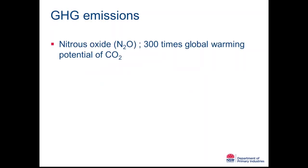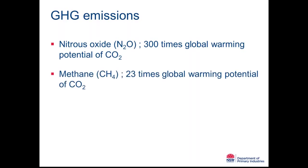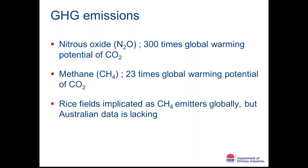The greenhouse gases we are interested in are nitrous oxide, which has 300 times the global warming potential of carbon dioxide — so very small quantities of nitrous oxide can have a profound impact on the overall greenhouse gas balance of a crop. And methane, which has 23 times the radiative forcing index, meaning similarly small emissions of methane have a large impact.